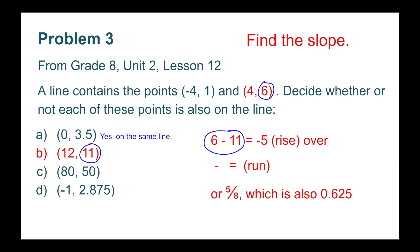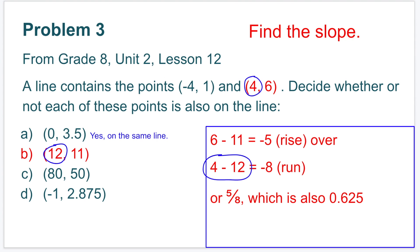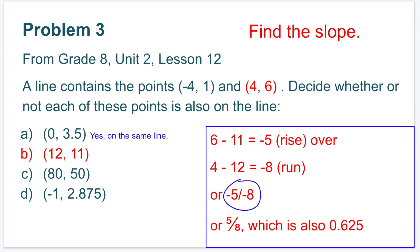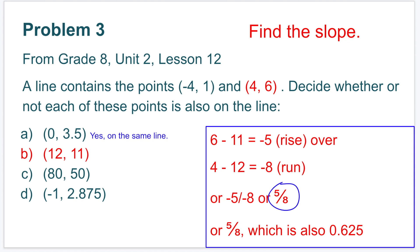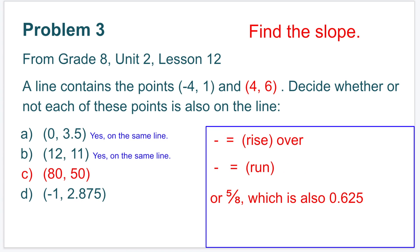B. 6 minus 11 equals negative 5 for the rise. And the run would be 4 minus 12, which equals negative 8. So the rise would be negative 5 and the run would be negative 8. Negative 5 divided by negative 8 is the same thing as 5 divided by 8, or 5 eighths, because a negative divided by a negative is a positive. 5 eighths is equivalent to 5 eighths. So the coordinates 12 and 11 would also be on the same line.